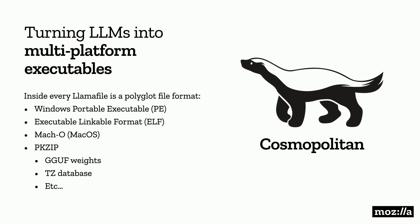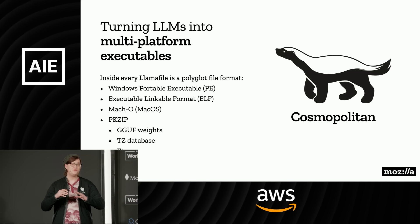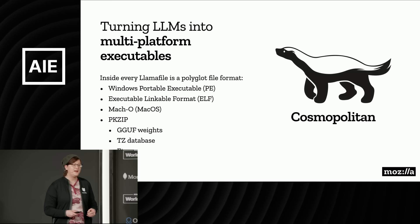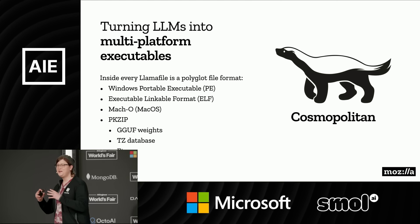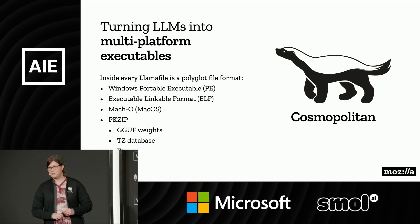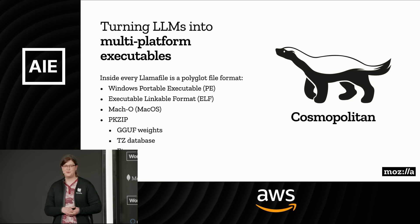I'm Justine Tunney, lead developer on LlamaFile. I'm going to talk about the cool work we've been doing in the community to help you run the fastest local LLM experience possible. We started by first getting it to run on systems at all. With Cosmopolitan, we take your weights in a single file and run it on six OSes. There's a cool hack that makes that possible: we take a Unix v6 shell script, put it in the MS-DOS stub of the portable executable, and that enables it to run on Mac, Windows, BSDs, Linux, and so on.